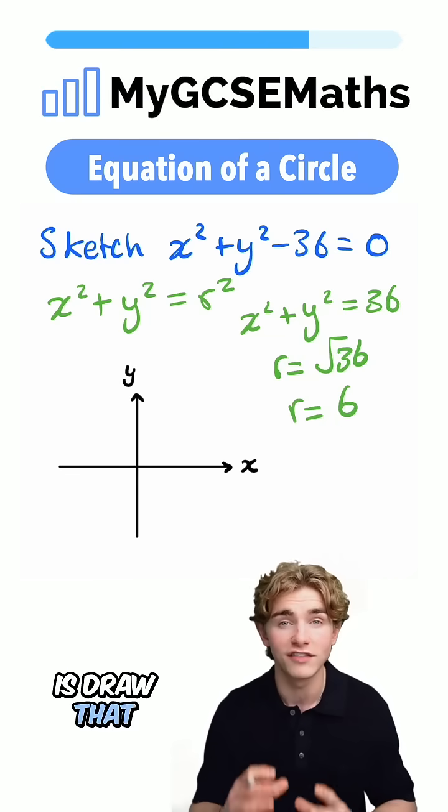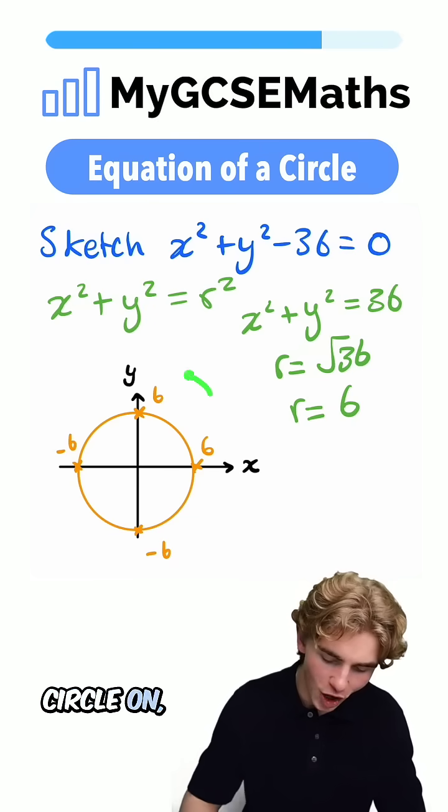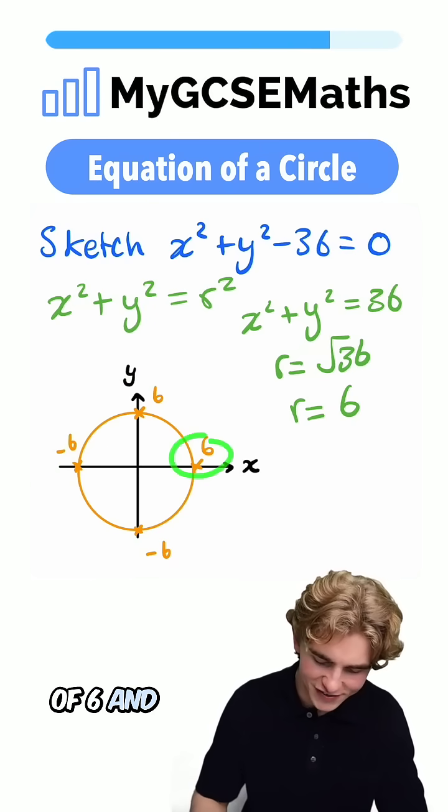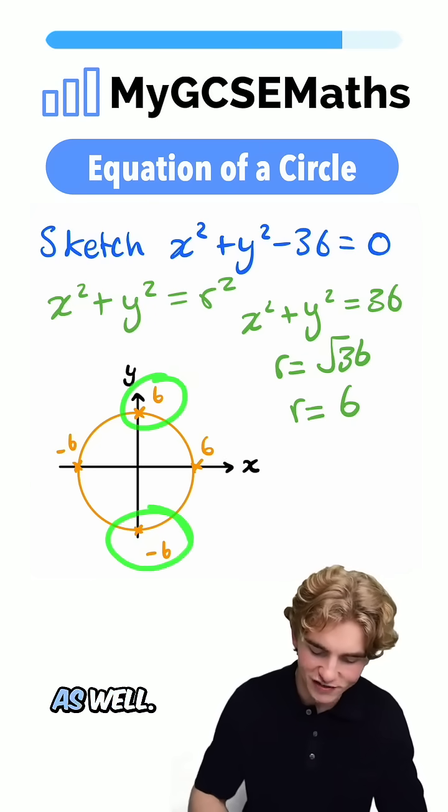Now all we need to do is draw that circle. We can see that when we draw our circle on, we have x-intercepts of 6 and -6 and y-intercepts of 6 and -6 as well.